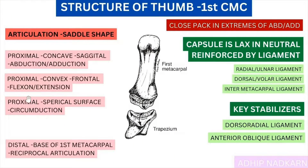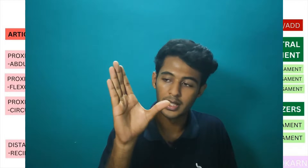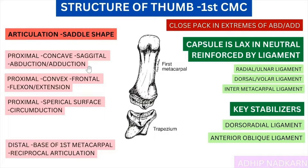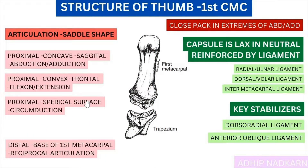Finally, there is a third articulation — a proximal spherical surface — which allows circumduction. Circumduction is a combination of flexion, abduction, and adduction, producing a circular or rotatory movement at the thumb. Some say there is so much incongruence that the ligaments hold the bone in place to allow this movement, while others say there is an actual articulation that enables circumduction.